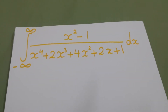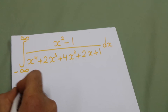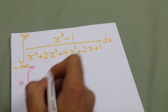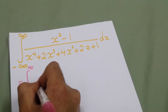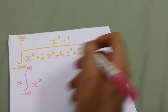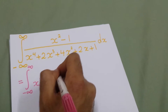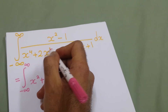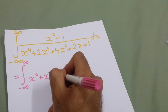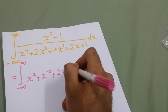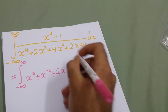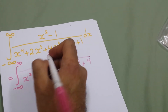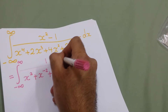First we will divide by x squared, so the integral will be equal to the integral from minus infinity to infinity. The denominator will be x squared: 1 divided by x squared will be x to the power minus 2, plus 2x cubed and 2x divided by x squared gives 2x plus 2x to the power minus 1, and plus 4. This is the denominator.